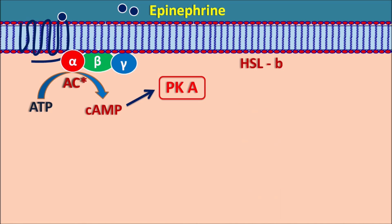Hormone sensitive lipase exists in a B form, which is the inactive form. Protein kinase A can convert the hormone sensitive lipase B form into the hormone sensitive lipase A form, which is the active form of this enzyme. When hormone sensitive lipase is activated, it can cleave the triglycerides into free fatty acids.